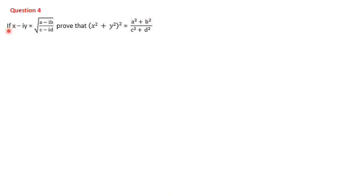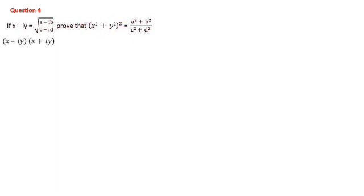Next, we shall discuss question number 4: If x - iy = √((a - ib)/(c - id)), prove that (x² + y²)² = (a² + b²)/(c² + d²). This is an indirect question. The key point is that (x - iy)(x + iy) = x² + y², which we need to recall to solve this.